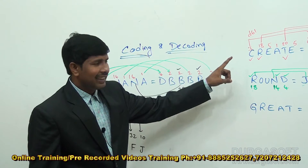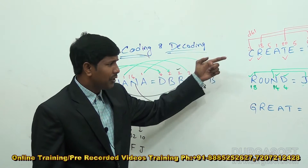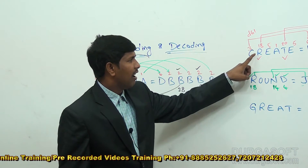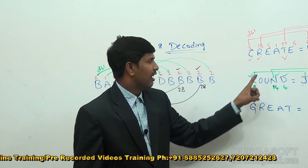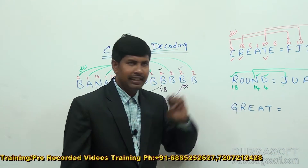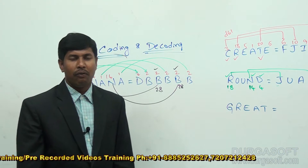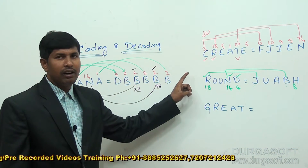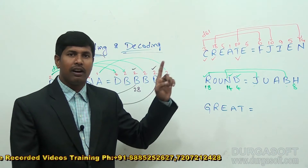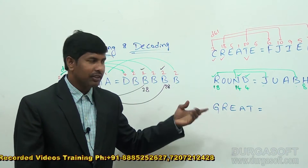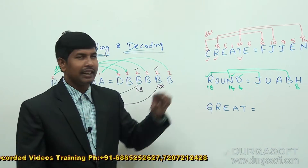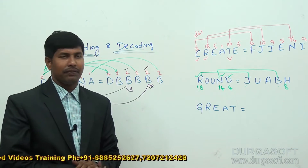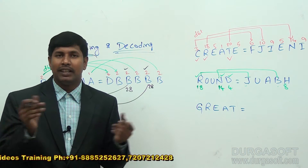Observe the letters for which we are getting double values: C, R, T, R, D, N, D. What you can understand here is, for all the consonants, we are getting the double values. And the letters we are left with are exactly vowels.